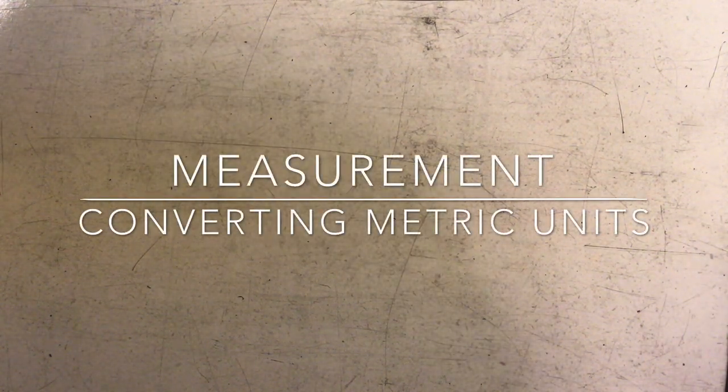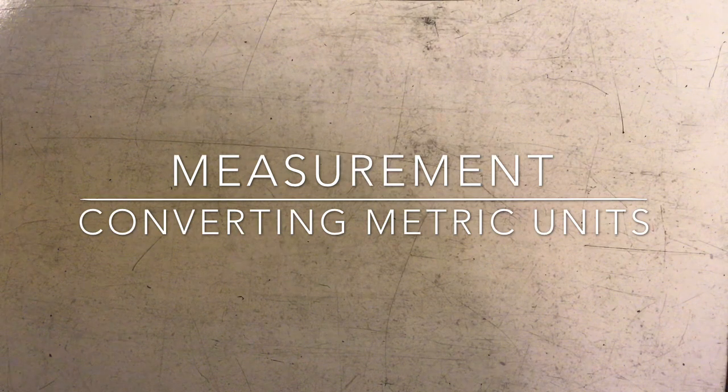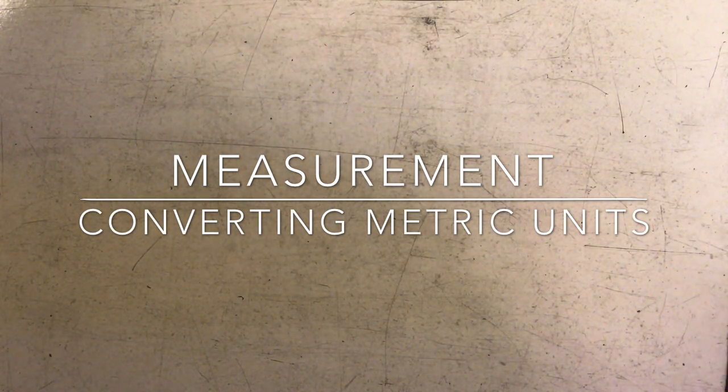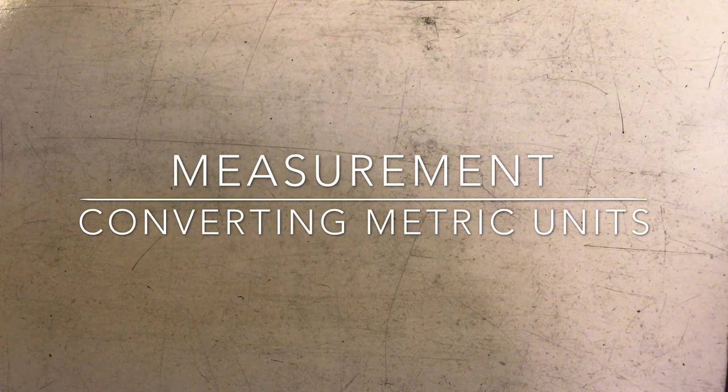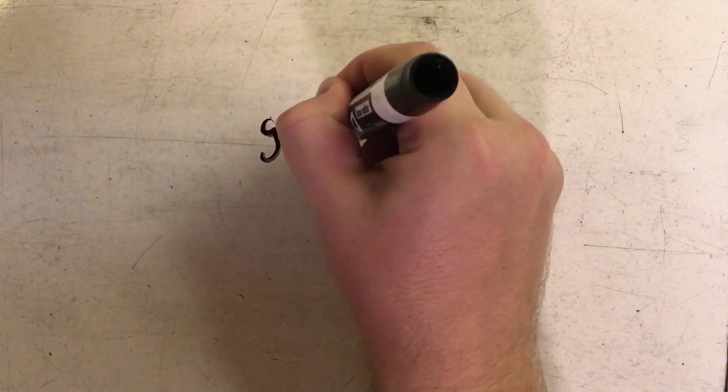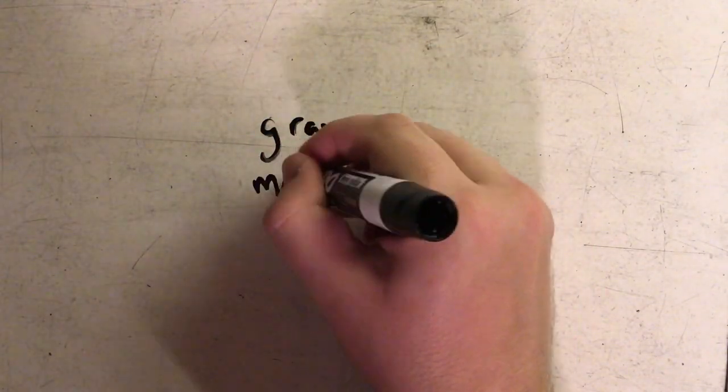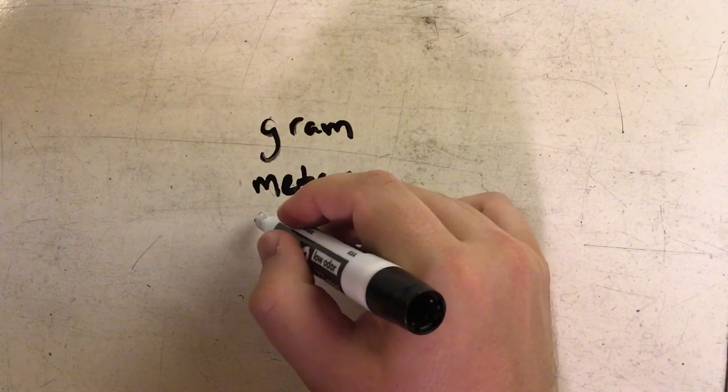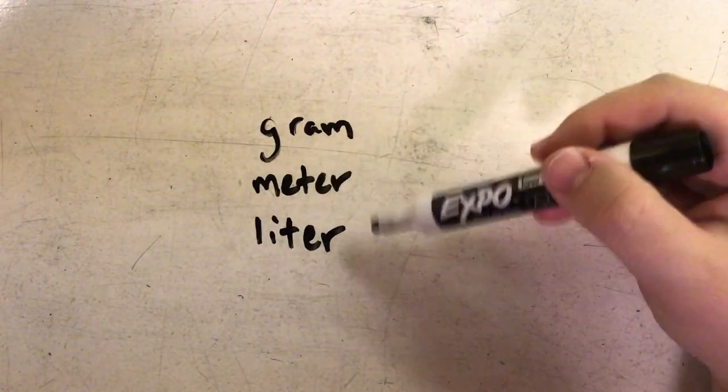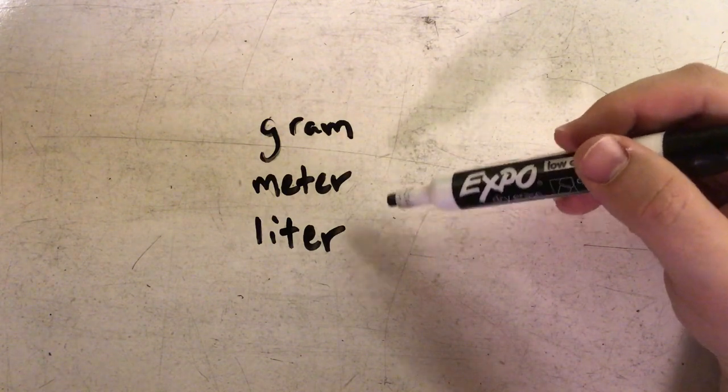Hey there, today we're going to learn how to convert metric units. Before we start converting, we need to familiarize ourselves with the metric units. There are three basic metric units that we have: we have the gram, we have the meter, and we have the liter. All three of these are what's known as our basic units.